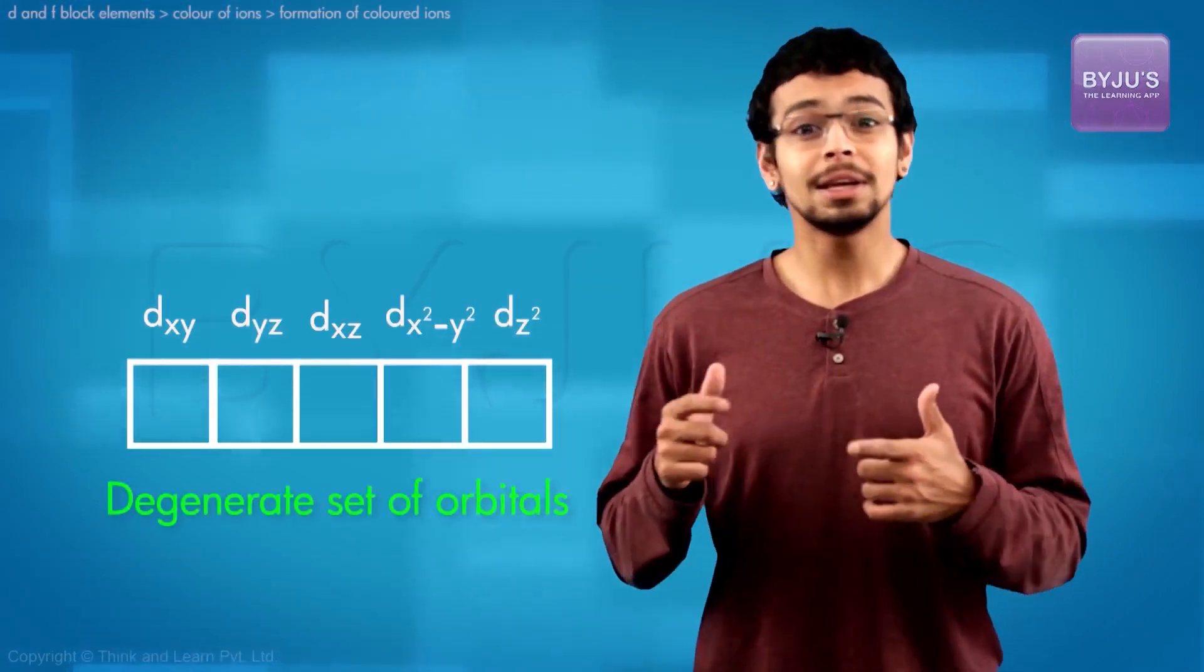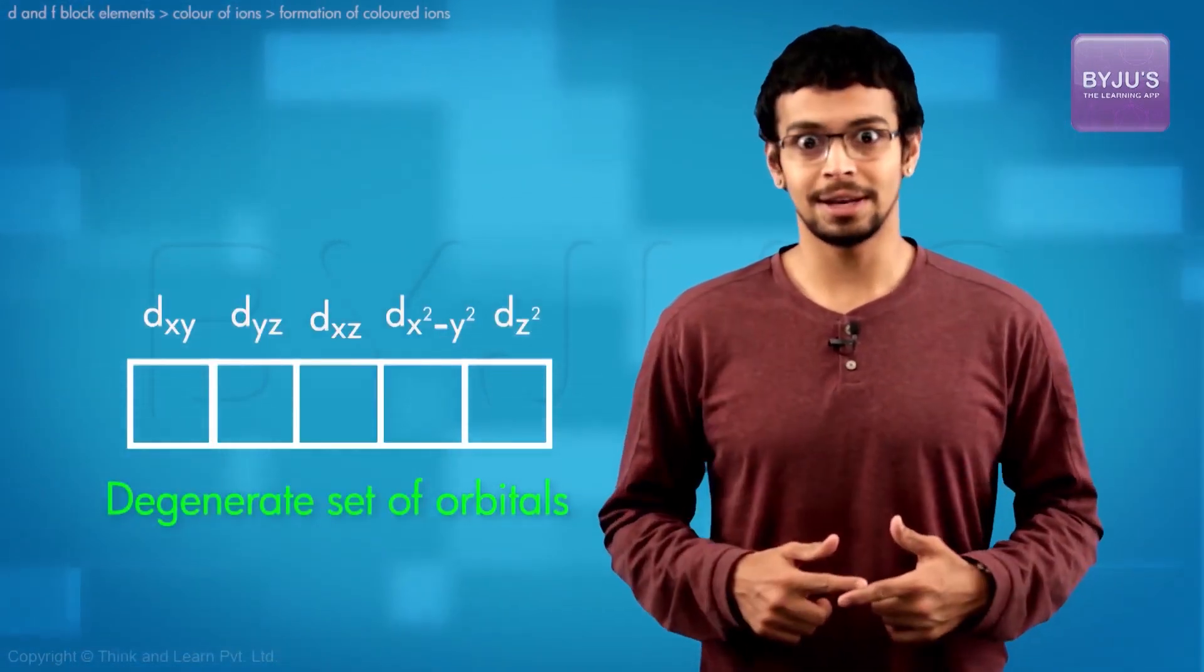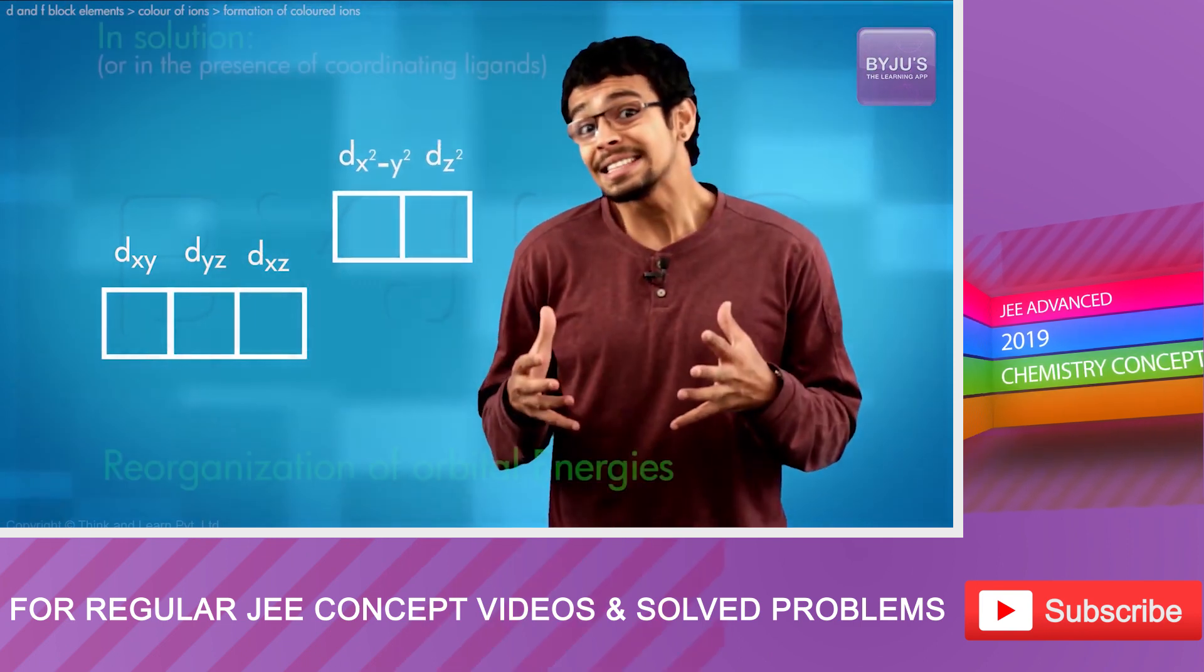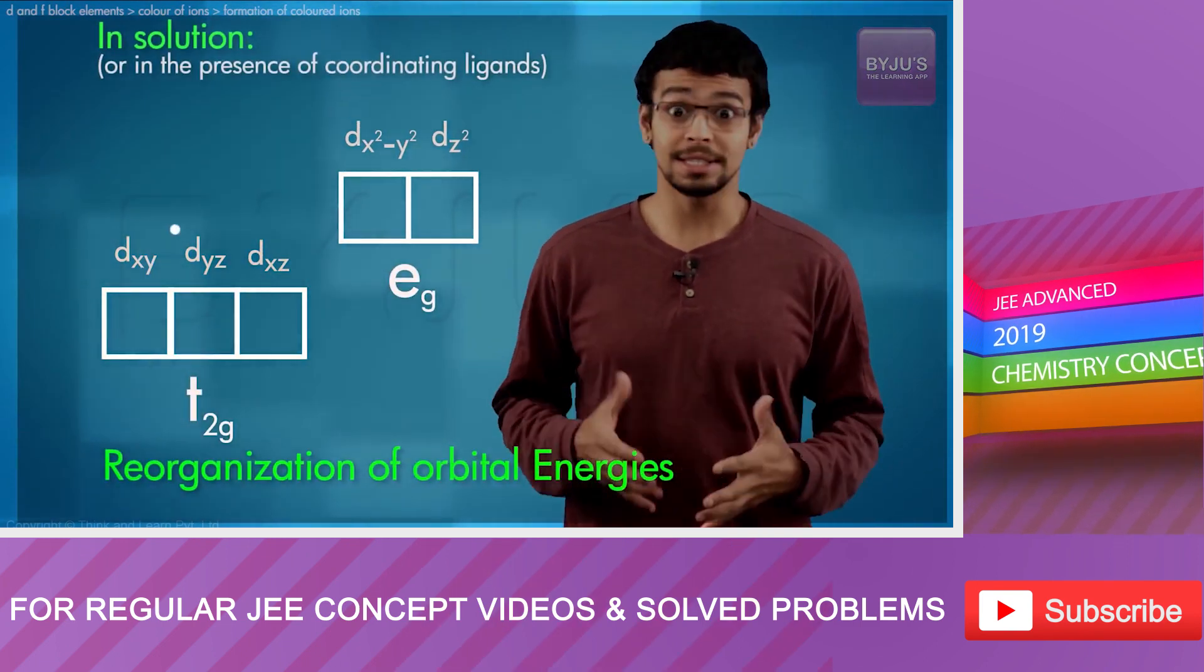You do recall that all of the d orbitals aren't degenerate, right? They're not of the same energies. There is a t2g eg reorganization of the d orbitals.